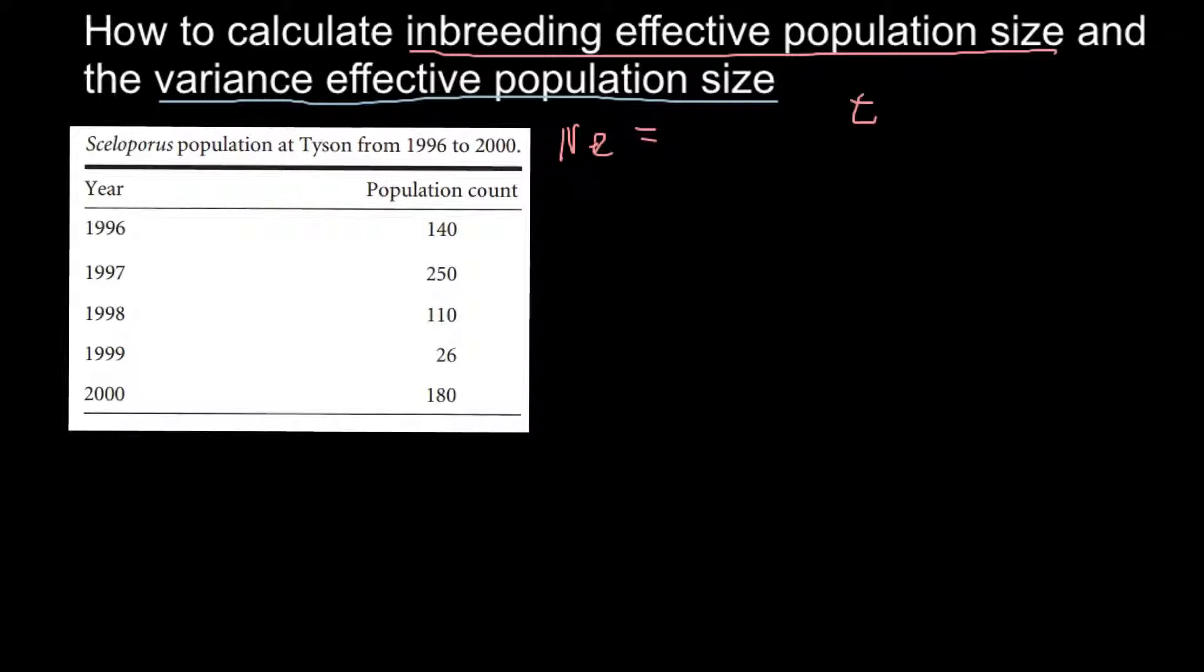On top here we put t that stands for the number of generations, and here below we have 1 divided by N0. By the way, this would be generation 0, this would be generation 1, 2, 3, and 4. So plus 1 divided by number of individuals in generation 1, plus number of individuals in generation 2, plus number of individuals in the generation that we call t minus 1. What does it mean? That means that for this formula we don't use the last generation of the progeny.